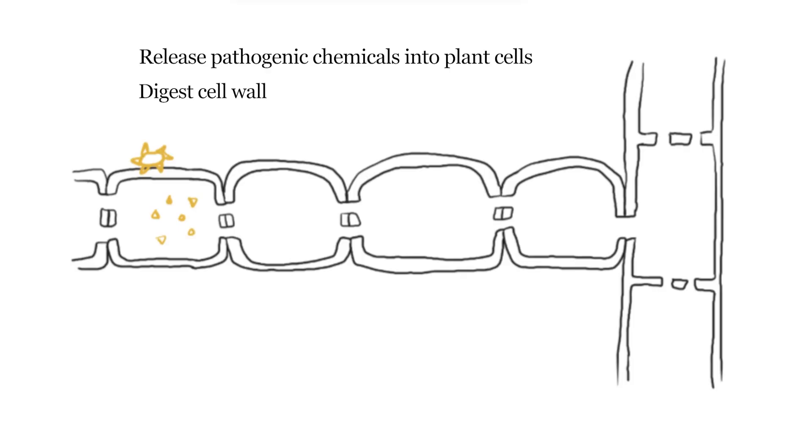The cell wall is made of cellulose, so they might release maltose and glucose. Either the presence of pathogenic material or the breakdown products of the cell wall - the plant cell will be able to detect these foreign chemicals. Once they detect these chemicals, the nucleus responds by triggering a cascade of reactions to counteract them.